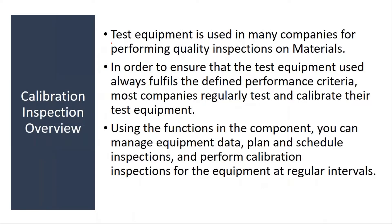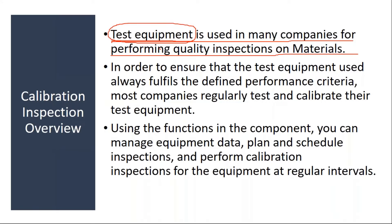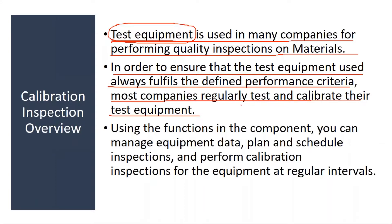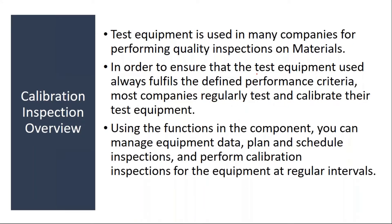Test equipment is used in many companies for performing quality inspection on materials. Normally in industries, in the quality control lab, they will use some test equipment to check the quality of the materials. In order to ensure that the test equipment always fulfills the defined performance criteria, most companies regularly test and calibrate their test equipment. Periodically they will check whether this test equipment is working properly and giving the proper results.